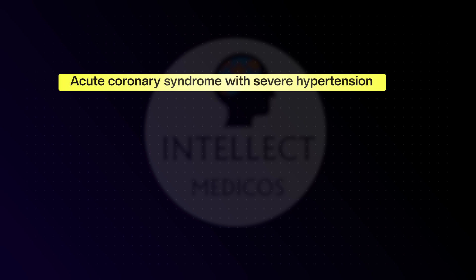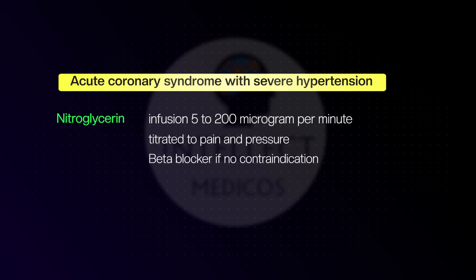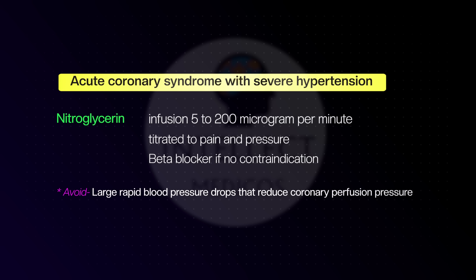For acute coronary syndrome with severe hypertension, start with nitroglycerin infusion at 5 to 200 micrograms per minute, titrated according to BP and pain relief. You can add a beta blocker if not contraindicated. Always avoid large rapid BP drops in ACS, as it reduces coronary perfusion pressure and can worsen the situation.